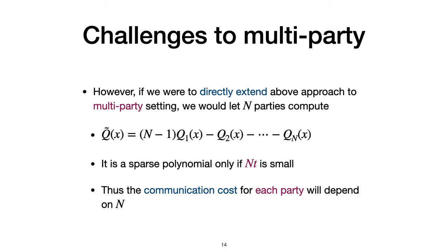However, if we were to directly extend the approach to a multi-party setting, we would let N parties compute q1x minus q2x to qNx. This is a sparse polynomial only if N times T is small, because the resulting polynomial has N times T terms. If the intersection cardinality is T, thus the communication cost for each party will depend on the number of parties N, which is highly undesired. We need to seek for other solutions.